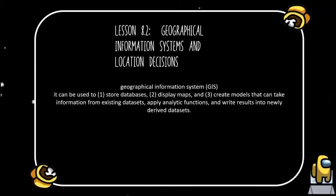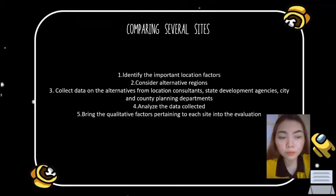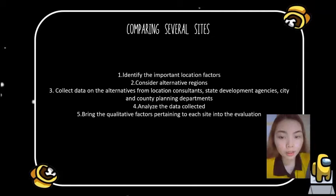Comparing several sites: A systematic selection process begins after perception or evidence indicates that opening a retail outlet, warehouse, office, or plant in a new location will improve performance. The process of selecting a new facility location involves a series of steps. First, identify the important location factors, then categorize them as dominant or secondary.